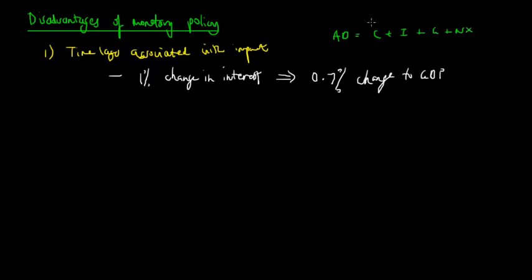But as we can see, interest rates do not fit into the components of either C, I, G, or NX, but it indirectly affects consumption expenditure, investment expenditure, net exports, and even government expenditure. So interest rates have an indirect effect on aggregate demand, and therefore the impact is often less than the change in interest rate.